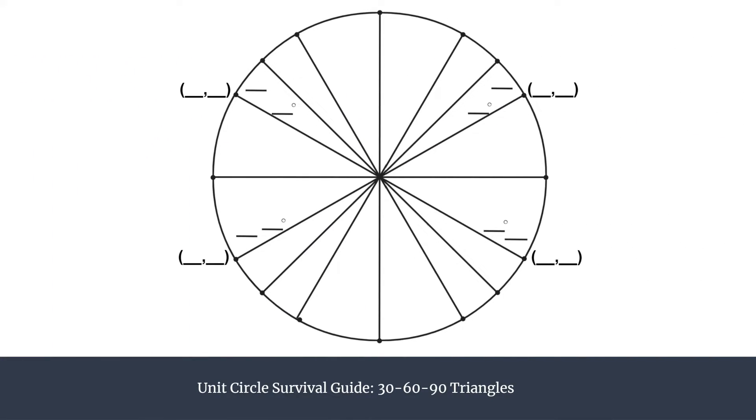So here we have a unit circle and you can see that only parts of it have labels and that's because we're going to focus on our 30 degree reference angles. You can see those are the ones that have the blanks and that's what we'll be talking about today.